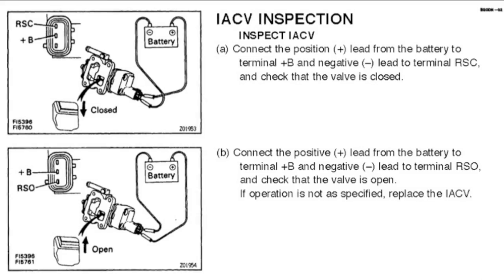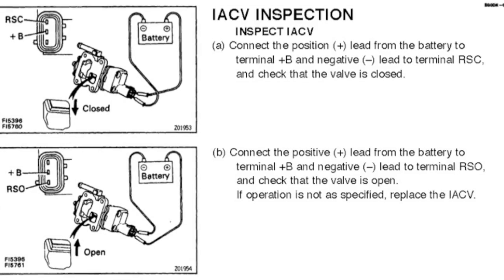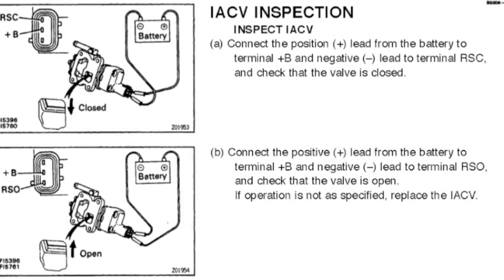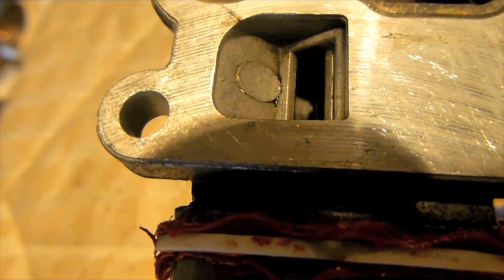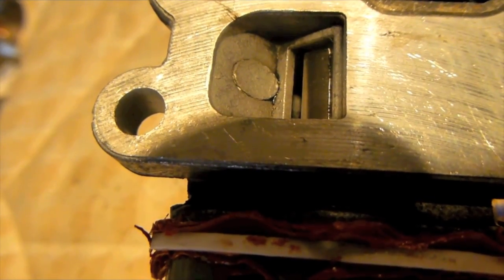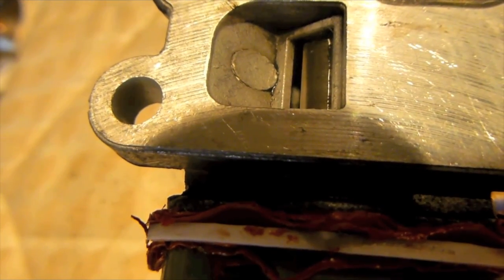To test the operation and movement of the valve, first clean it very well with carb cleaner. Then we apply 12 volts of car battery power to the center pin and then apply a ground alternately to the RS open and RS closed pins. We can see that the valve responds properly but neither fully opens or closes.